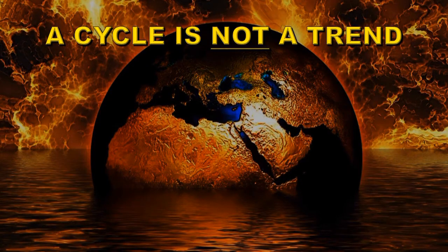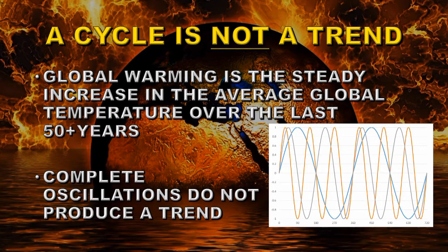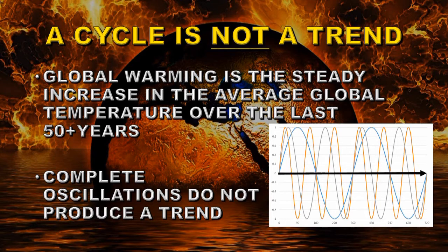The first thing to remember is that global warming is a trend — a steady increase in the average global temperature over the last 50 to 100 years. A cycle is not a trend. If you have a complete oscillation, it does not produce a trend. I've got three different types of oscillation here at three different frequencies, and you can see over the period of this plot they all sum to zero, so they're not producing a trend. The only way you can get a trend from an oscillation is to be observing only part of that oscillation.